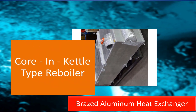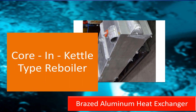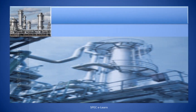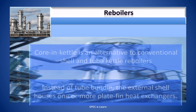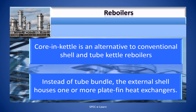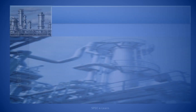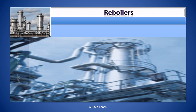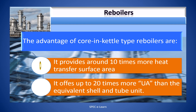Now let me introduce you to the most innovative and advanced reboiler technology: the core in kettle type reboiler. Core in kettle is an alternative to conventional shell and tube kettle type reboilers. Instead of a tube bundle, the external shell houses one or more plate fin heat exchangers. It provides around 10 times more heat transfer surface area compared to a conventional shell and tube kettle type reboiler, and offers up to 20 times more UA than the equivalent shell and tube unit.